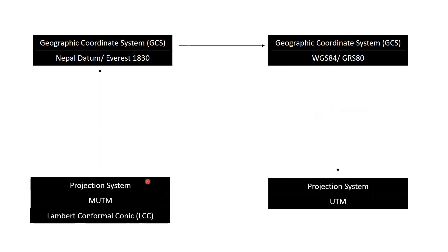This is how we move or transform GIS data which are in a local coordinate system into a global coordinate system. Or, let's say we have GIS data based in a UTM system — the GCS associated with UTM is generally WGS84 — and we want to convert these data into a MUTM or LCC system.